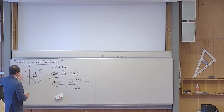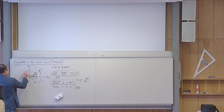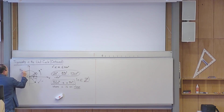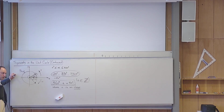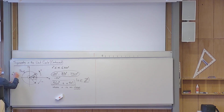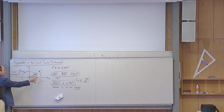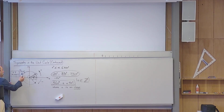We also learned something about the properties of a point on the unit circle. If I pick a random point P with coordinates x and y on the unit circle, do you remember the nice relation between x and y? The x-coordinate and the y-coordinate of every point on the unit circle satisfy the relation x squared plus y squared equals 1.